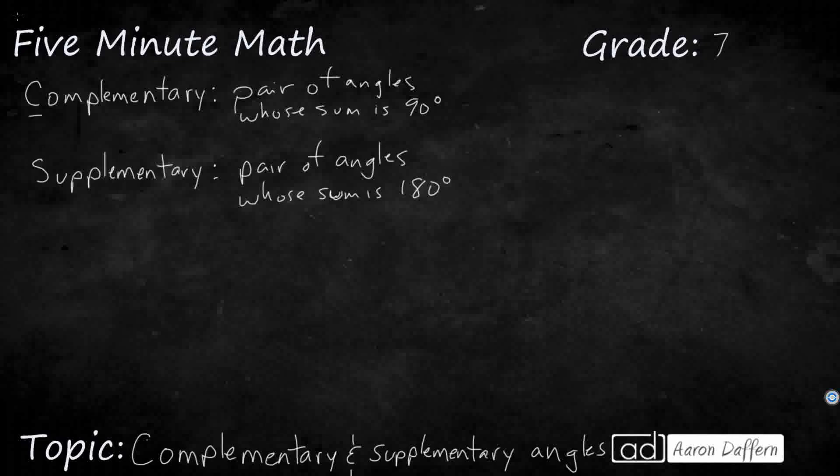One thing I do to keep these two separate is to think that the C and the S are in alphabetical order, and then 90 and 180 are in numeric order. So that's how I keep those two separate.